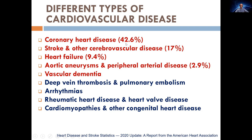As you can see here in Western countries, almost 43% of all cardiovascular disease are due to coronary heart disease. Then we have 17% of stroke, 9.4% of heart failure, 3% of aortic diseases including aneurysms and peripheral arterial disease, and then vascular dementia.